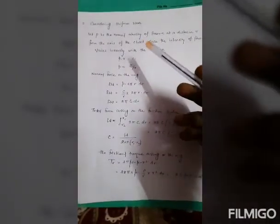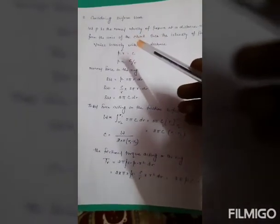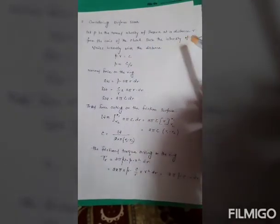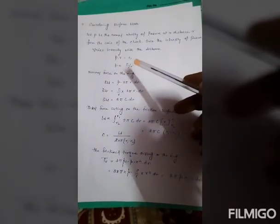Considering the uniform wear, let small p be the normal intensity of pressure at distance small r from the axis of the clutch. With the intensity of pressure varying inversely with the distance, small p into r is equal to c, so small p is equal to c divided by r.